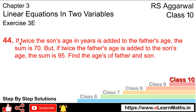Let's do question number 44 of Exercise 3E — linear equations in two variables. Question 44 states: if twice the son's age in years is added to the father's age, the sum is 70. But if twice the father's age is added to the son's age, the sum is 95. Find the ages of the father and son.